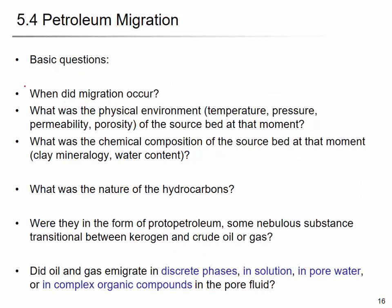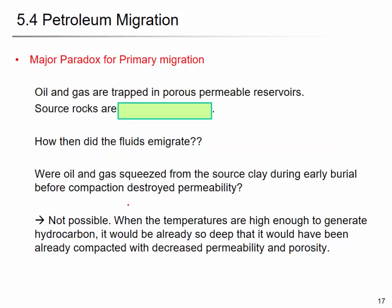The basic questions about primary migration include: when does migration occur, what is the physical environment during migration, and what is the chemical composition of the hydrocarbon at the moment of migration? A major paradox is that oil and gas are trapped in coarse, permeable reservoirs — carbonate or sandstone — while the source rock is impermeable shale. So how did the fluid migrate? One idea is that oil and gas escaped from the source clay during early burial before compaction destroyed permeability.